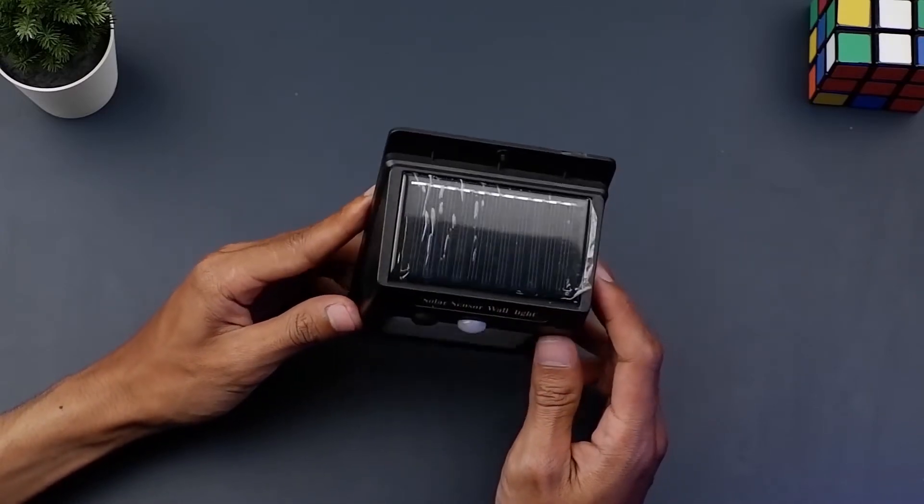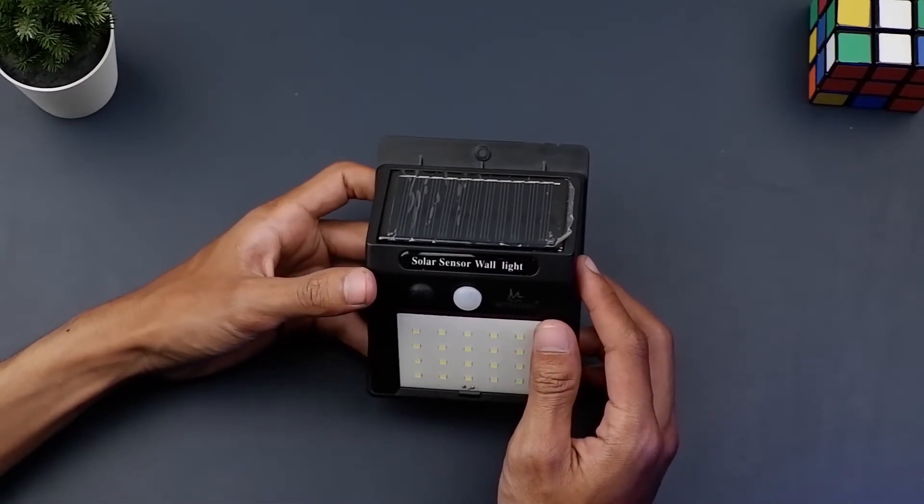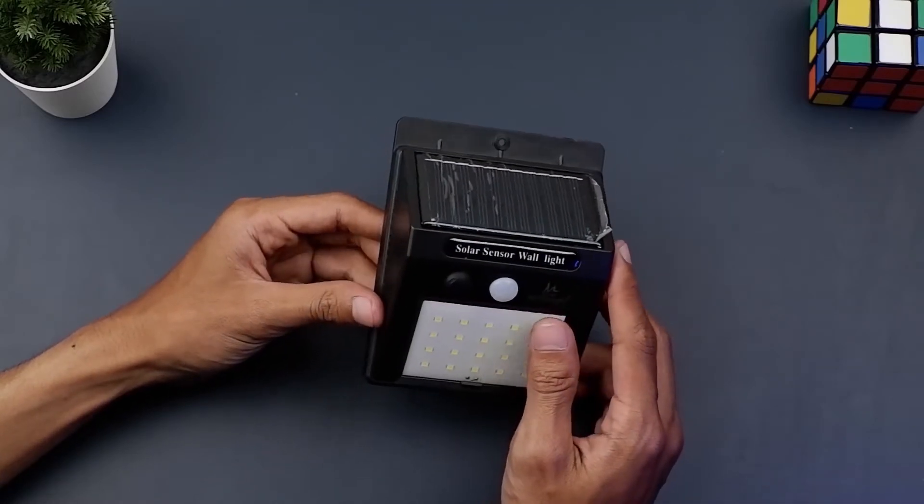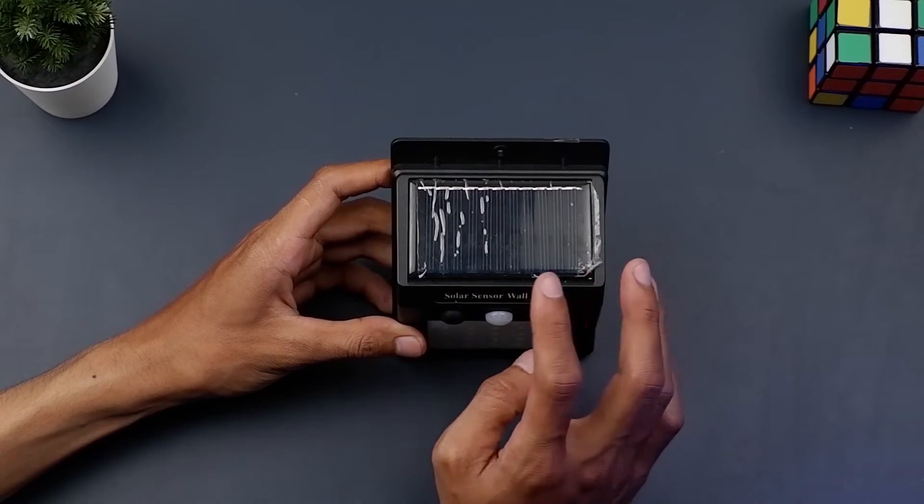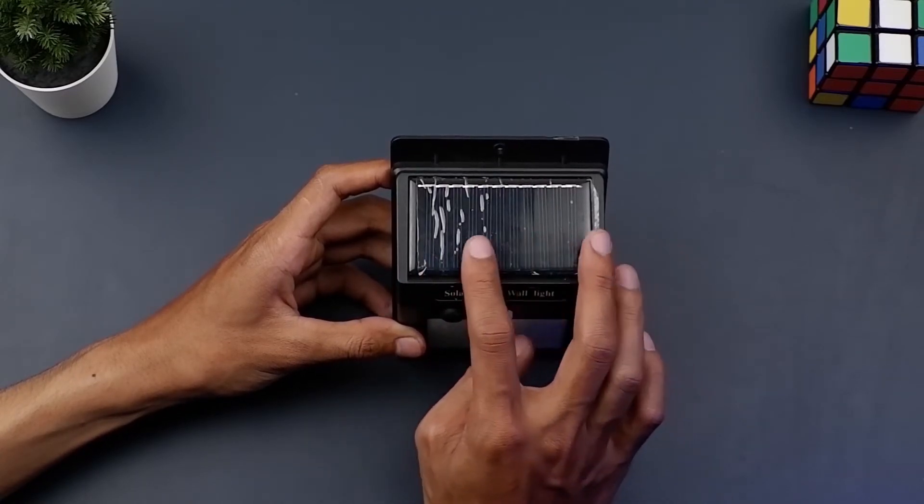Cocok dipasang di dinding depan rumah atau di taman. Kedua karena lampu ini outdoor jadi bisa dipastikan tahan air ya. Kapasitas baterainya 1200 mAh cukup besar dan jika solar panelnya terkena cahaya matahari maka otomatis akan charge kembali baterainya.